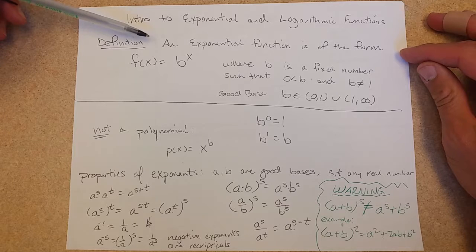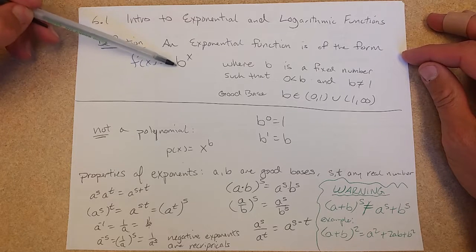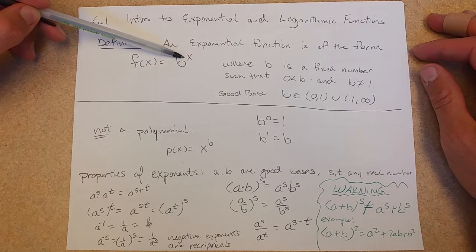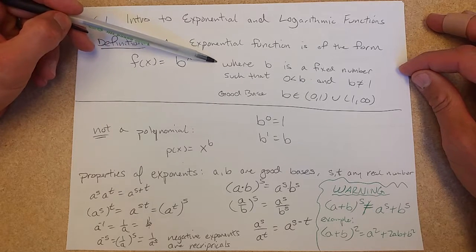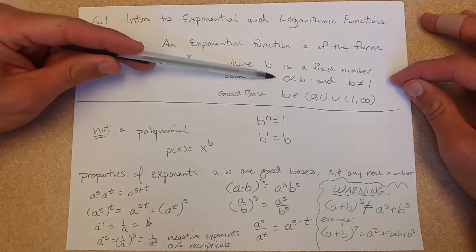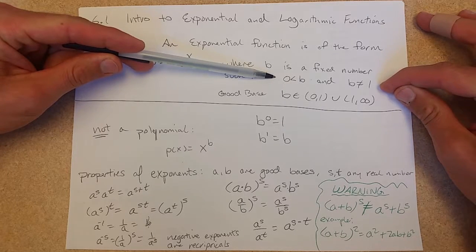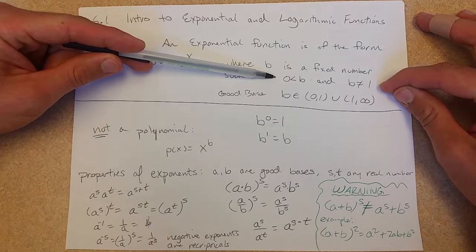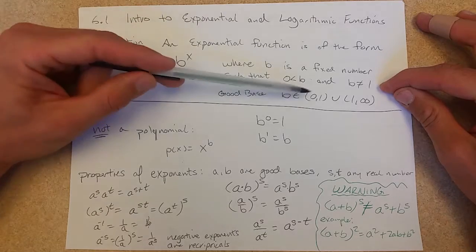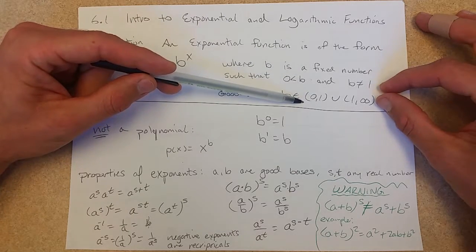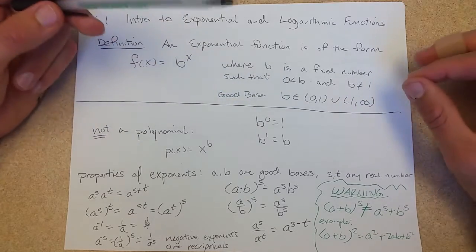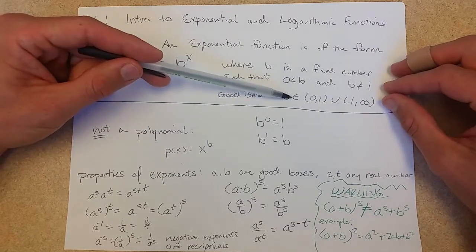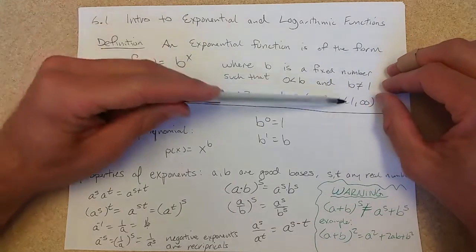An exponential function is written as a base to a power. And this base has to be what I call a good base. A good base is greater than 0 and not equal to 1. So there's two intervals: 0 to 1 or 1 to infinity. I'm going to call this a small base and this is a big base. Either way your base needs to be either 0 to 1 or 1 to infinity.